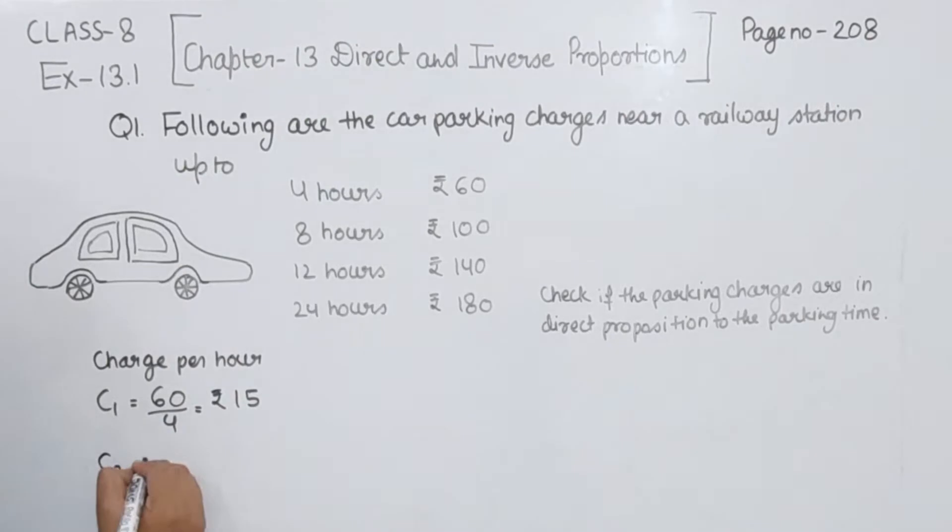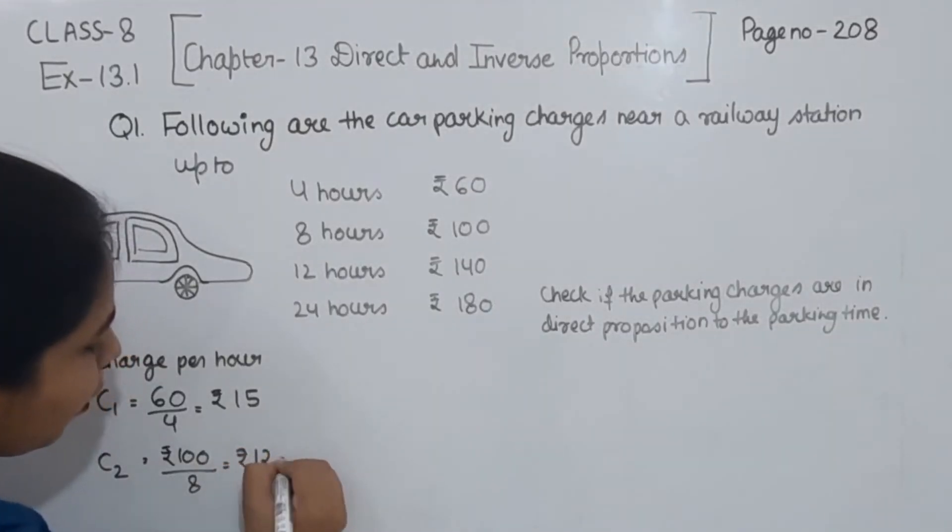Now comes to the second combination, this one we are having is 8 hours Rs. 100. So Rs. 100 divided by 8, this one we are having as equal to Rs. 12.50.